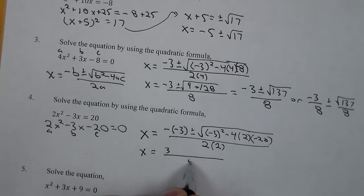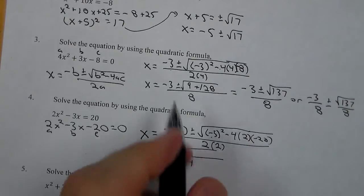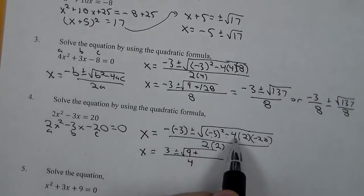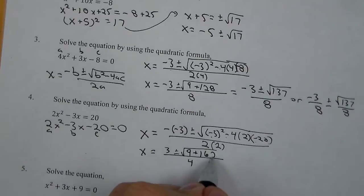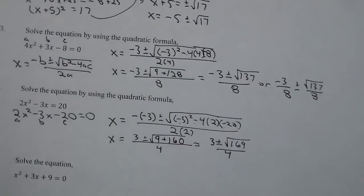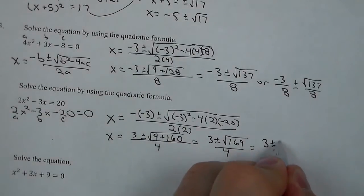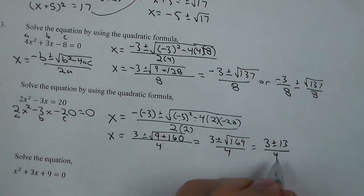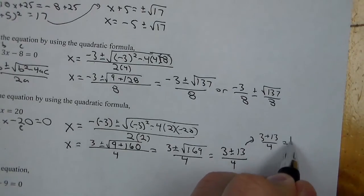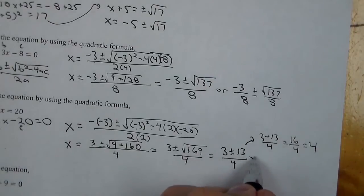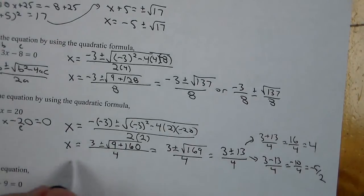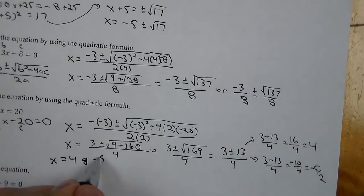So we have a positive 3 out in front, a 4 on the bottom. Inside the radical we have a 9, and then it's a negative negative, so it would be positive. 4 times 2 is 8, times 20 is 160. Which gives us 3 plus or minus the square root of 169 over 4. We know the square root of 169 is 13. So we get 3 plus 13 over 4, which is 16 over 4 or 4, and 3 minus 13 over 4, which is negative 10 over 4 or negative 5 over 2. Our two solutions are 4 and negative 5 over 2.